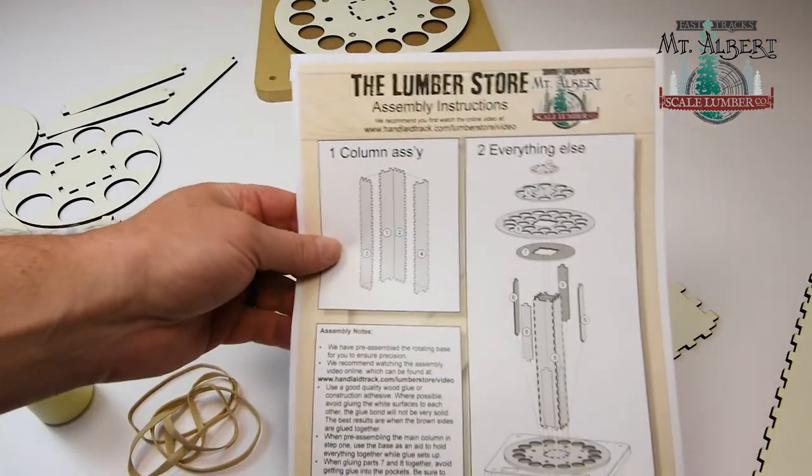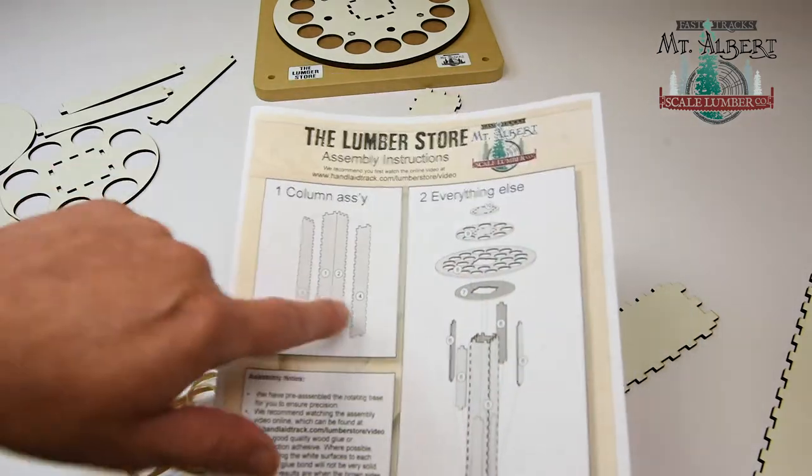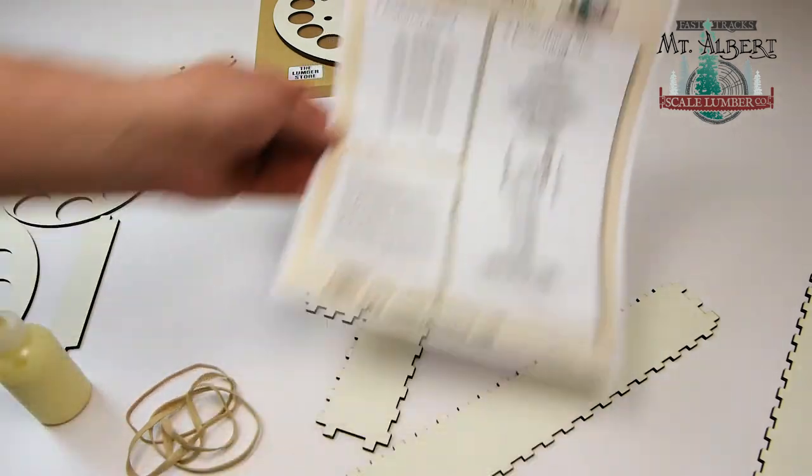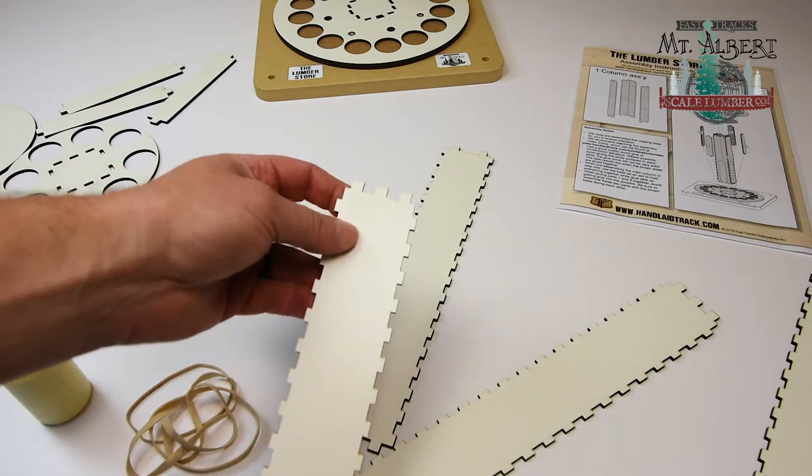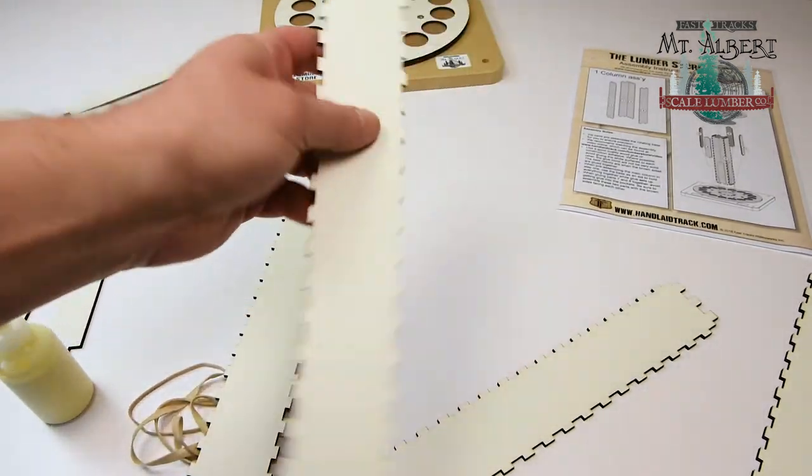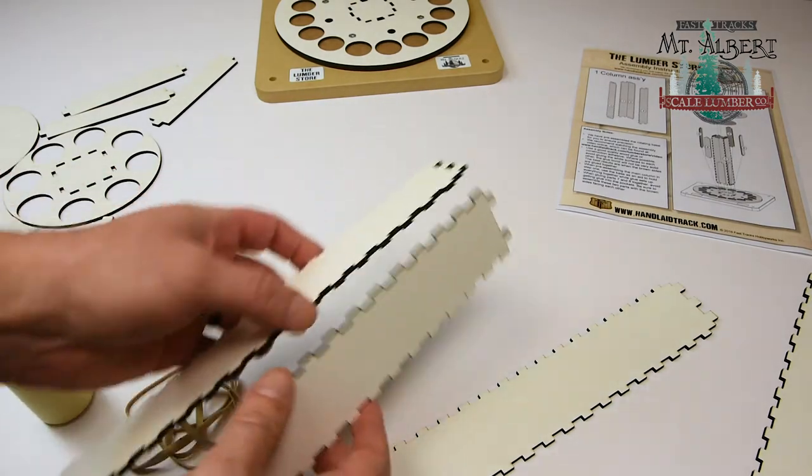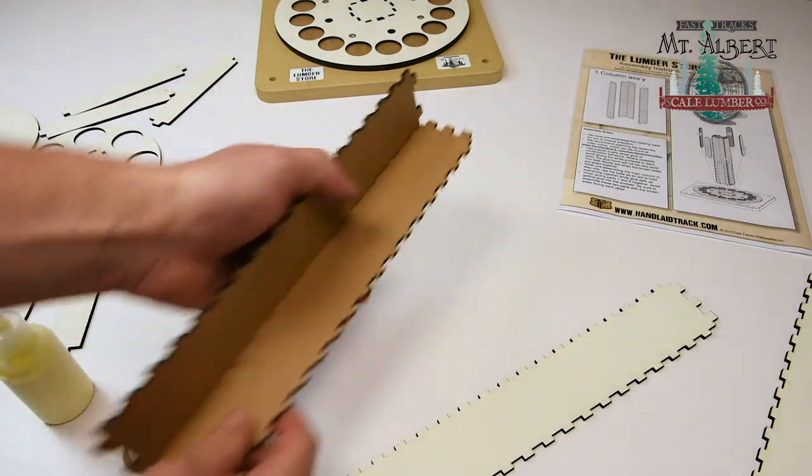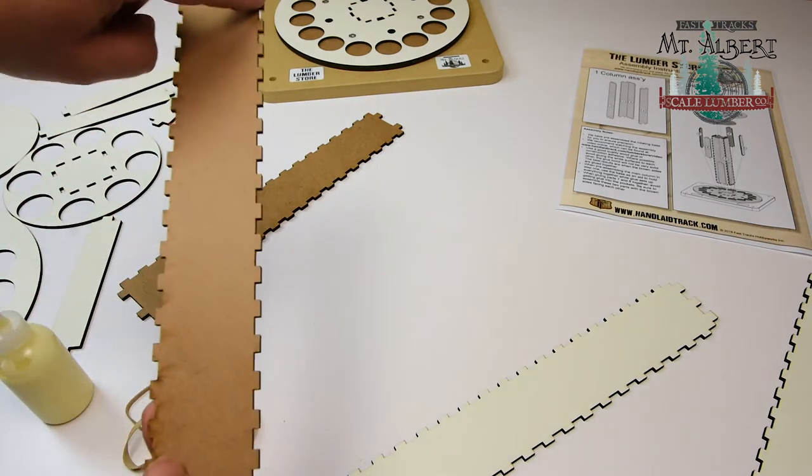The first step is to put together the main column which consists of these four tall pieces. As I mentioned earlier they can only be put together one way so that should make it fairly simple. If you look at the parts you'll see that there's one part that has three tabs on the top and there's another one that has two tabs on the top. These two go together like so and then another three tab here and the two tab here.